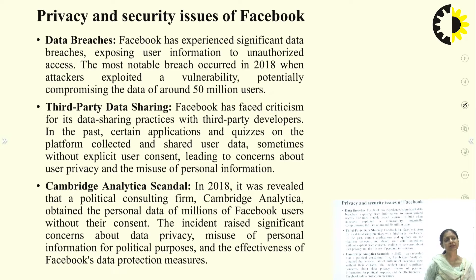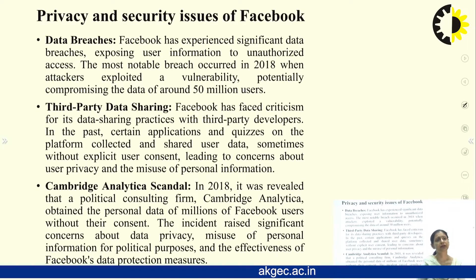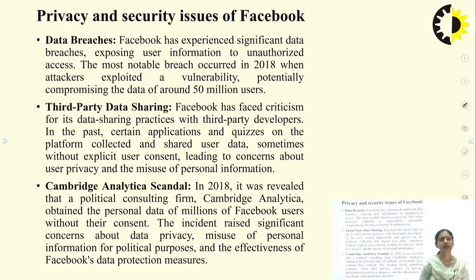What are the privacy and security issues related to Facebook? The first is data breach — when user information is given to unauthorized access. A major data breach occurred in 2018 when attackers exploited a vulnerability, potentially compromising data of around 50 million users. Regarding third-party data sharing, Facebook has faced criticism for its data sharing practices with third-party developers, as certain applications and quizzes collected and shared user data, sometimes without explicit user consent, raising concerns about privacy and misuse of personal information.